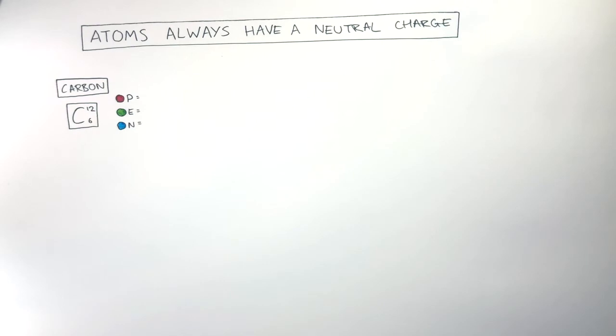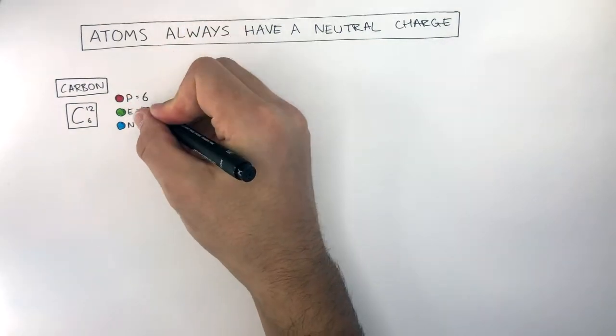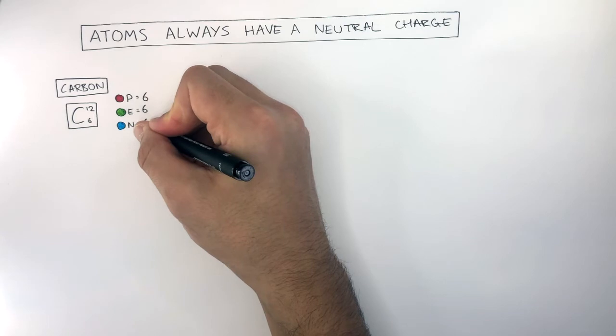Let's take a look at a carbon atom to understand why this is. Carbon has a mass number of 12 and an atomic number of 6. Therefore, a carbon atom has 6 protons, 6 electrons, and 6 neutrons.